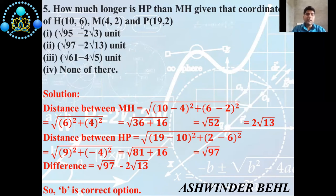Fifth question: how much longer is HP than MH? Given coordinates H(10, 6), M(4, 2), and P(19, 2). There are four options: (a) √95 − 2√3 units; (b) √97 − 2√13 units; (c) √16 − 4√5 units; (d) none of these. Now we discuss the solution.